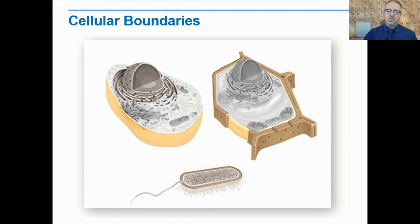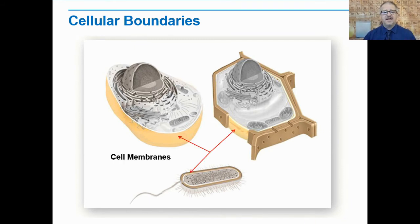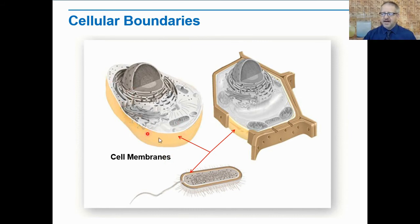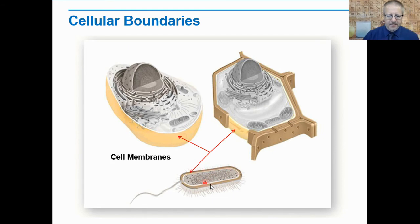Knowing that, would you say it's true or false that all cells have a cell membrane? If you are thinking true, you are thinking correctly — all cells have cell membranes. Animal and human cells have a cell membrane. Plant cells have a cell membrane inside their cell wall. Prokaryotes also have a cell wall and a cell membrane inside of it.